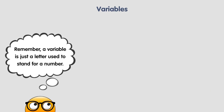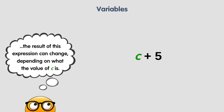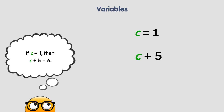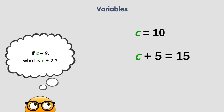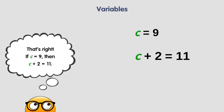So remember, a variable is just a letter used to stand for a number. For example, if I write c plus five, the result can change depending on the value of c. If c is equal to one, then c plus five equals six. If c is equal to ten, then c plus five equals fifteen. If c is equal to nine, then c plus two is equal to eleven.